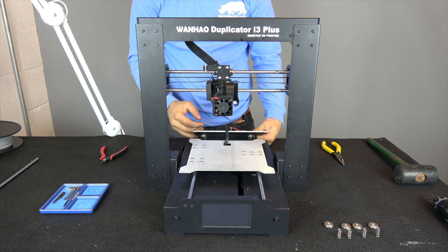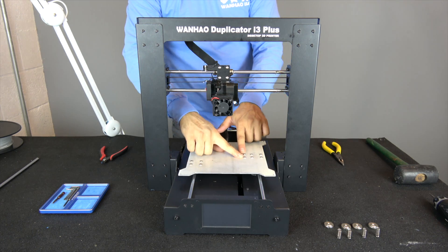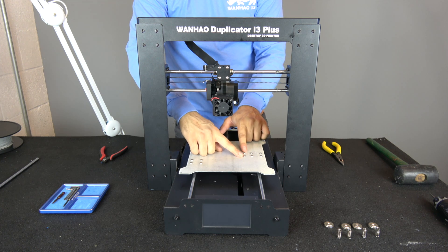Carefully flip the heated bed plate back and proceed to remove these two screws. These hold the y-axis belt mount to the aluminum plate.